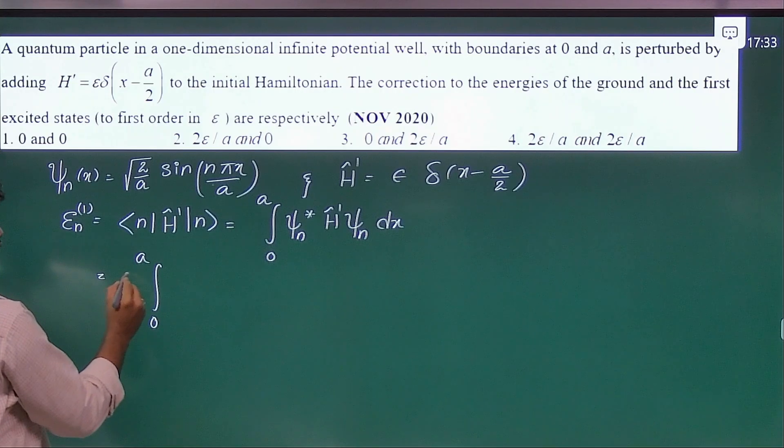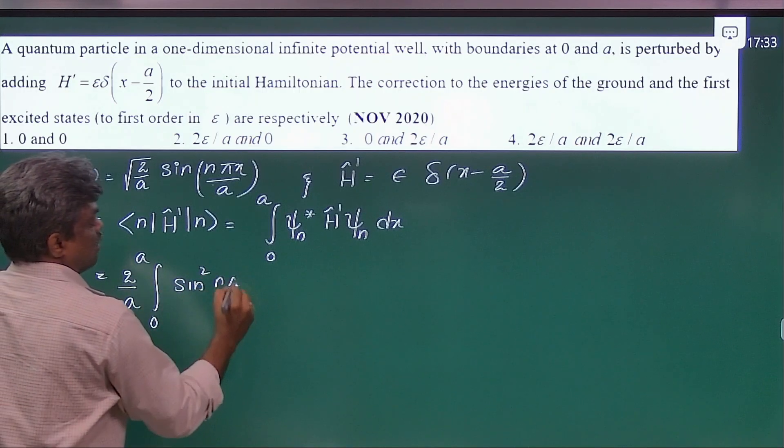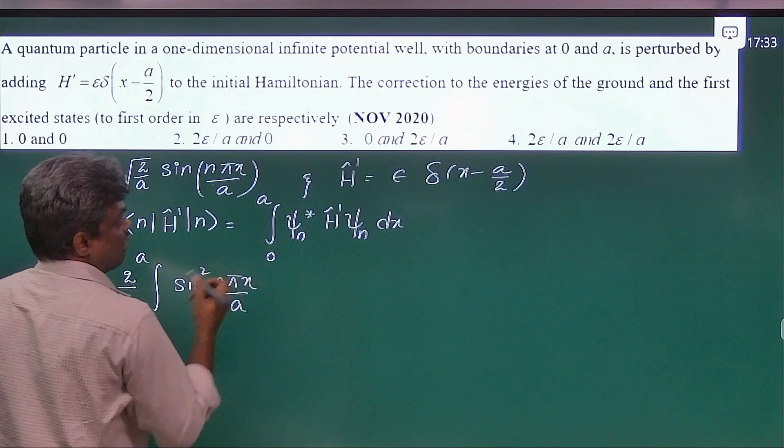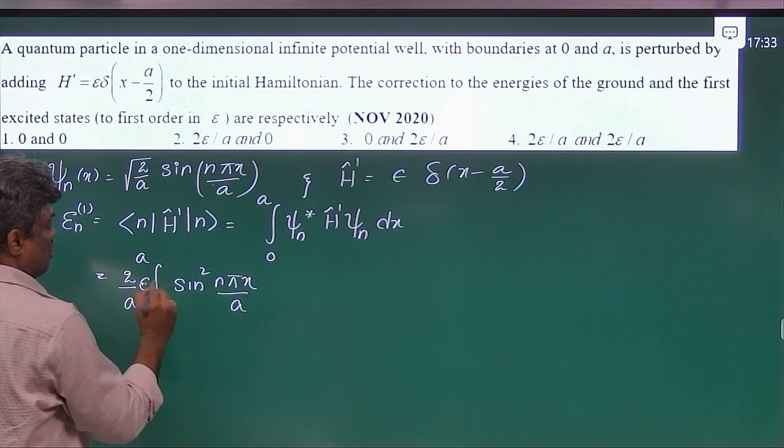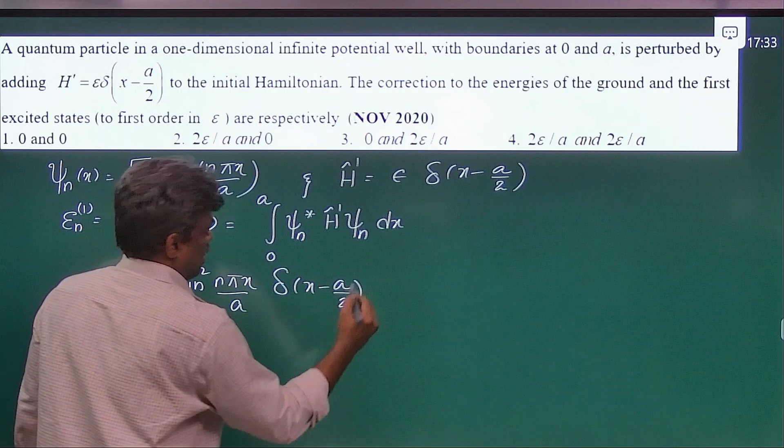And psi star psi will be 2 by a here outside. And after that, sin square n pi x by a. And your h prime epsilon is outside, and delta of x minus a by 2 dx.